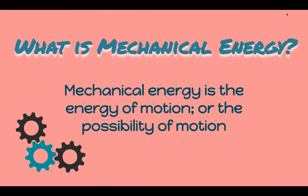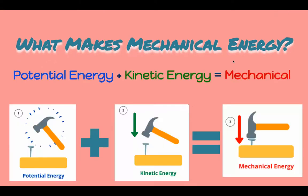So what is mechanical energy? Mechanical energy is the energy of motion or the possibility of motion. It has two parts: potential energy, which is the possibility of motion, and kinetic energy, which is the actual motion. Together, those things combined make mechanical energy. For example, when you're hammering a nail, the potential energy is when you lift up the hammer—it has the possibility of motion. Once you bring it down, that's kinetic. When the nail goes into the wood, that is the mechanical energy.